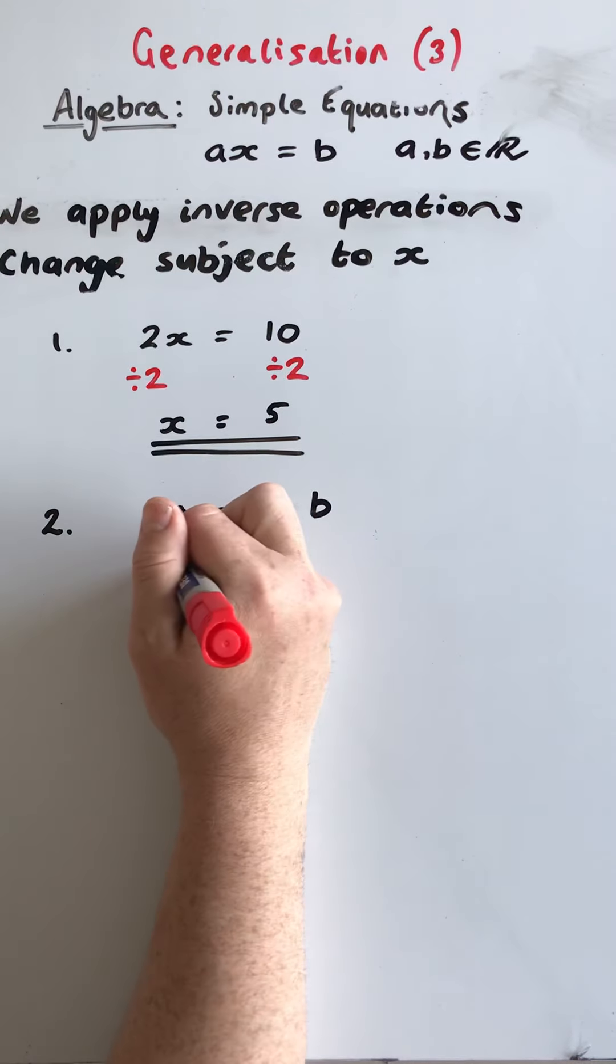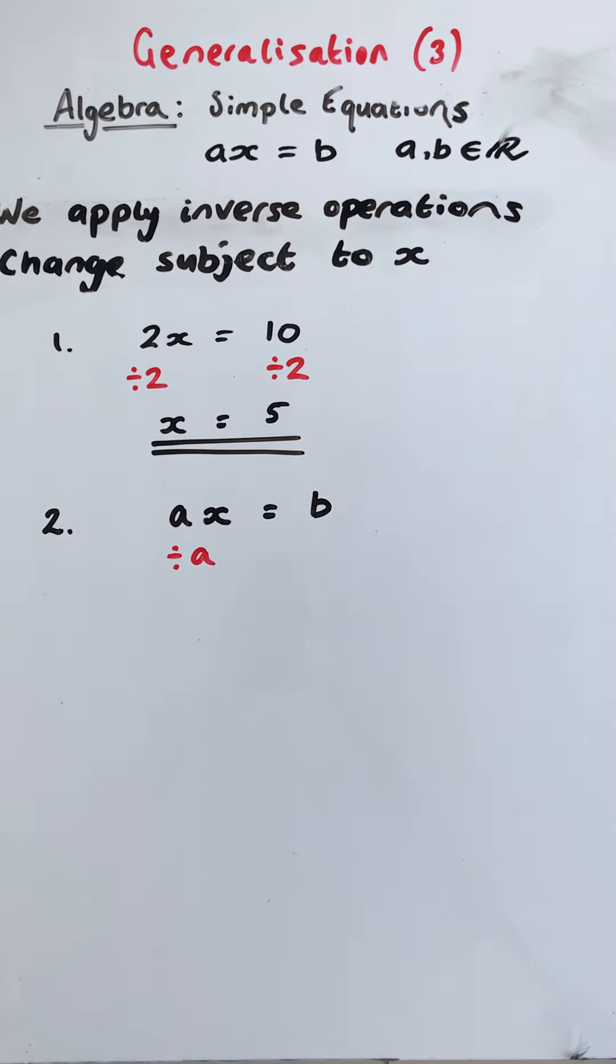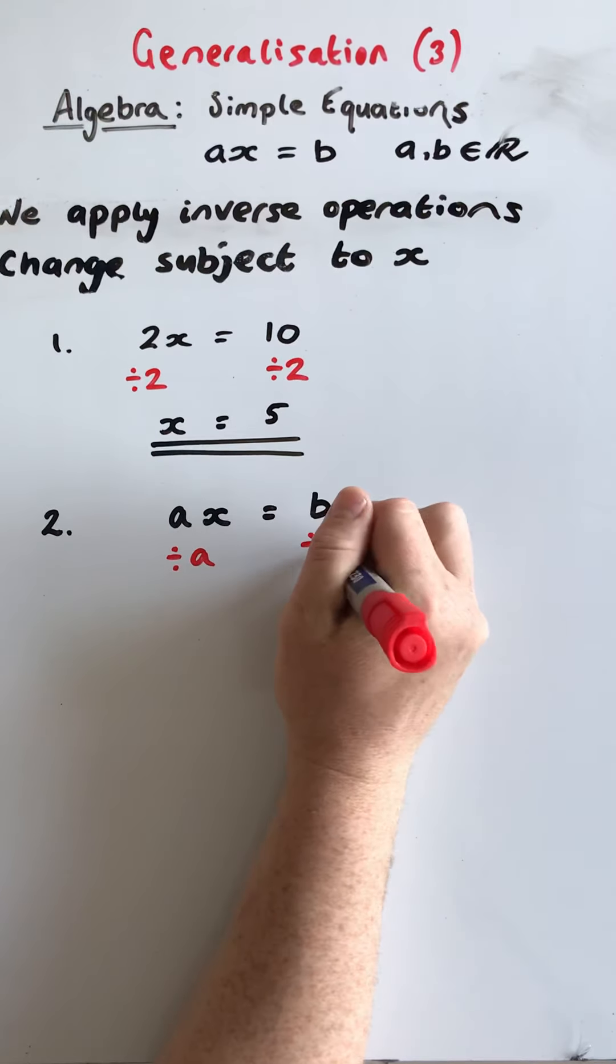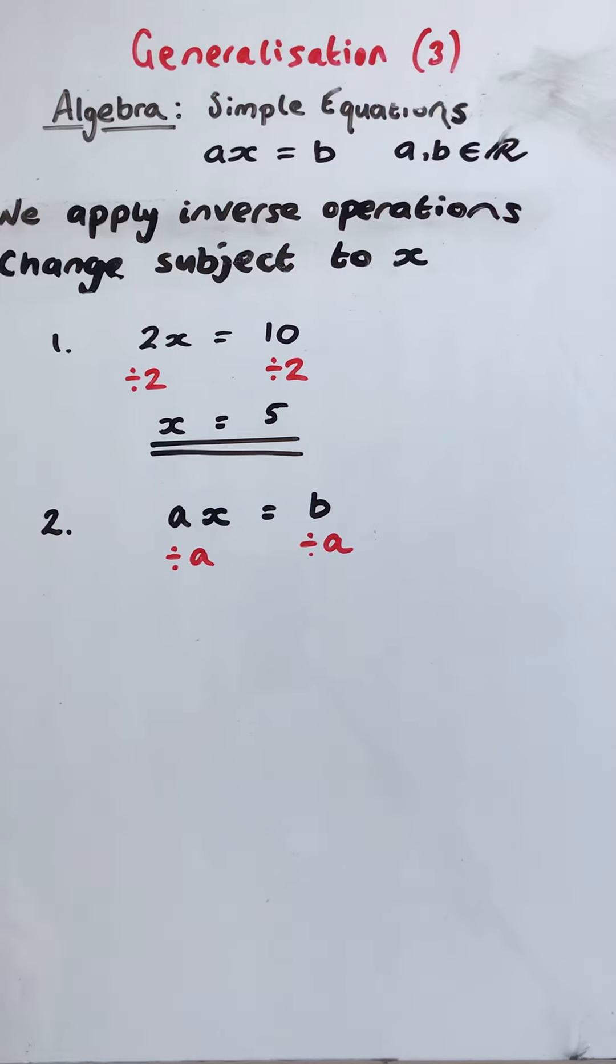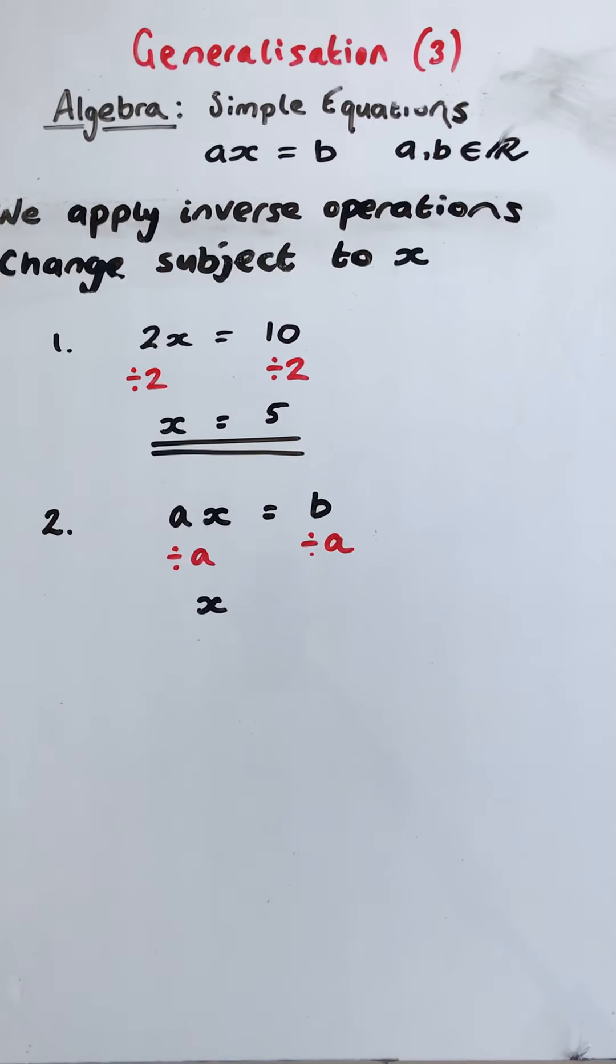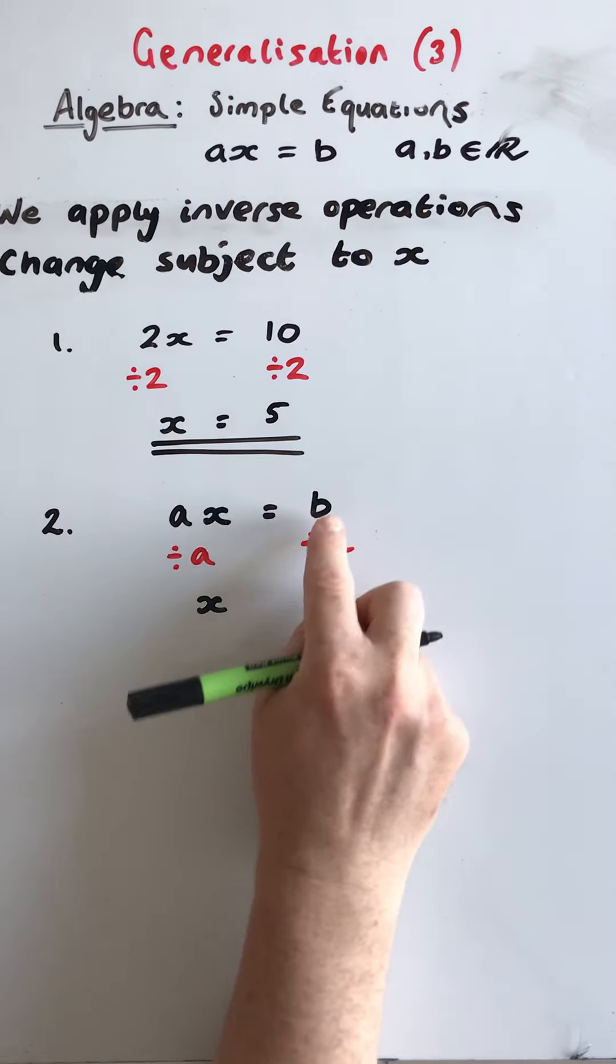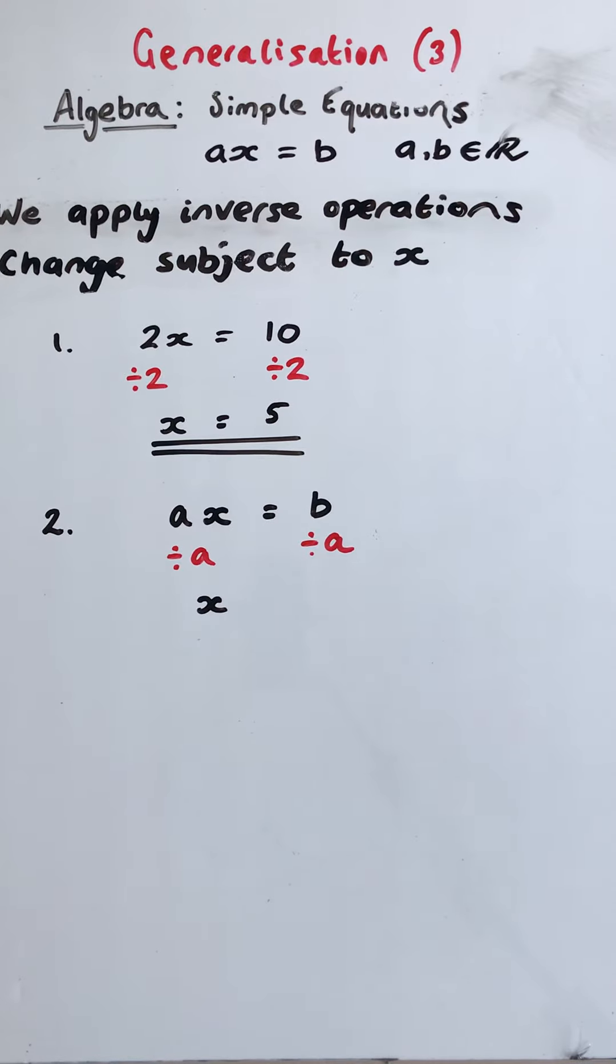The multiplicative inverse is division. Whatever we do to the left hand side we must do to the right hand side to keep it balanced. a divided by a in the same way that 2 divided by 2 is 1. We don't write that 1. It's x. So b divided by a.